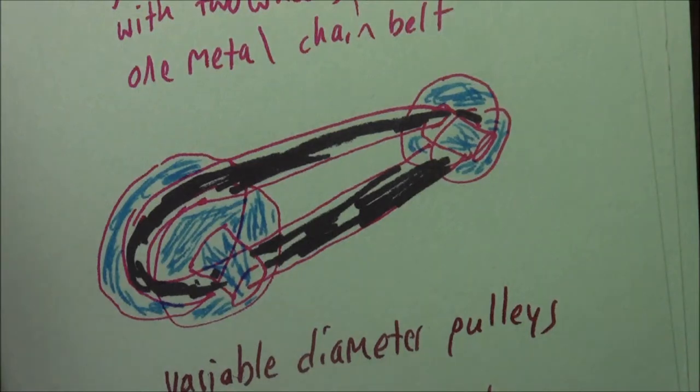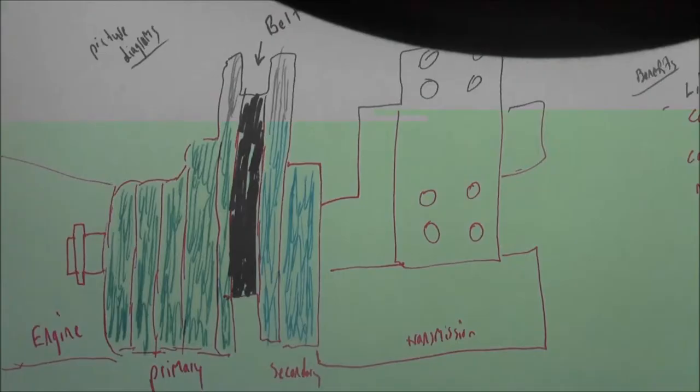A continuous variable transmission or CVT is a gear ratio change device using a pulley system with two wheels and one metal chain belt. These are variable diameter pulleys.